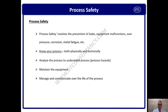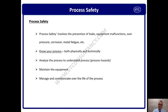Process safety involves the prevention of leaks, equipment malfunction, over-pressure, corrosion, and metal fatigue. It deals with process characteristics of pressure, temperature, flow, and level. The essential elements require knowing the processes both physically and technically to understand complete process safety management. PHA — Process Hazard Analysis — is one of the key elements of process safety management. A dedicated presentation on PHA is available on the IRTC channel.